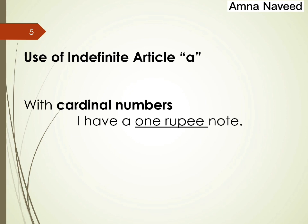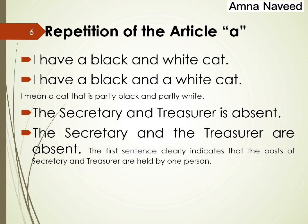Another use of the indefinite article 'a' is with cardinal numbers — your simple counting numbers: one, two, three, four, five, and so on. Whenever you use these cardinal numbers you will use article 'a' with them, but remember to think about the context. For example: 'I have a one-rupee note' or 'I have a ten-rupee note.' Here 'one' and 'ten' are cardinal numbers, so we use 'a' with them.